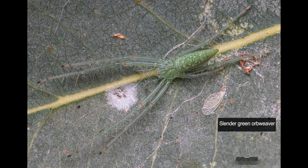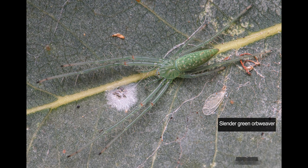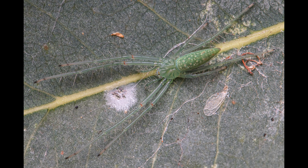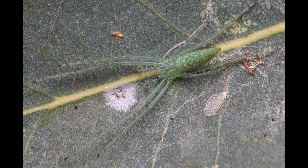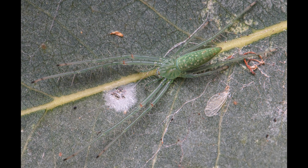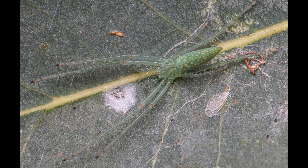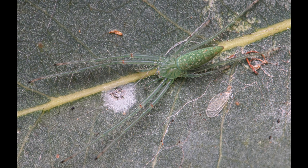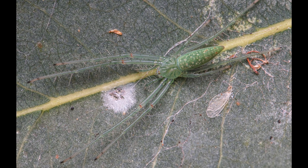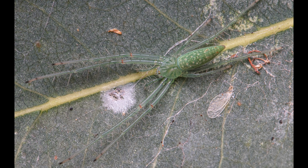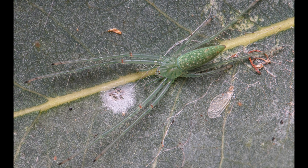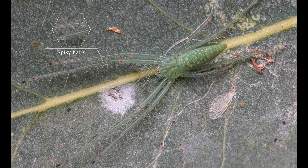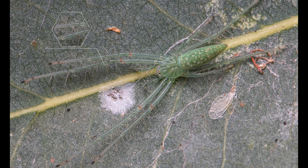The first few shots are of a slender green orb weaver. This species is found throughout Australia and is diurnal, which means it's active throughout the day. In this shot taken from above you can see that the abdomen has an elongated heart shape, and the legs have long spiky hairs, similar to that of lynx spiders.